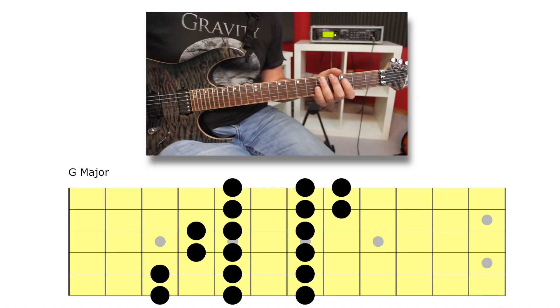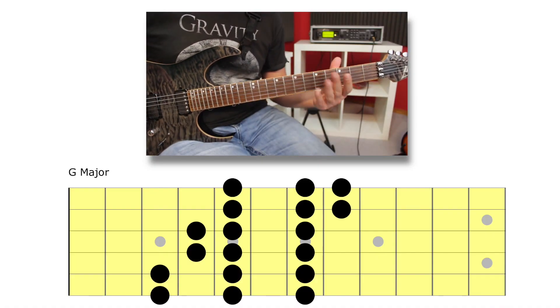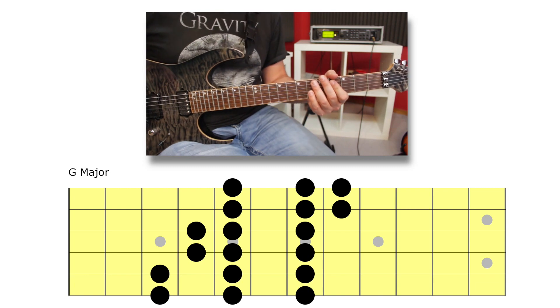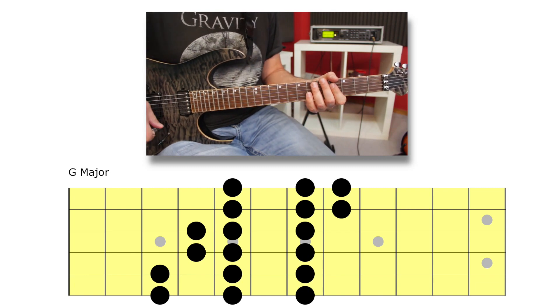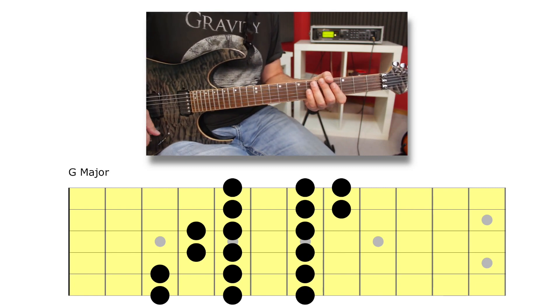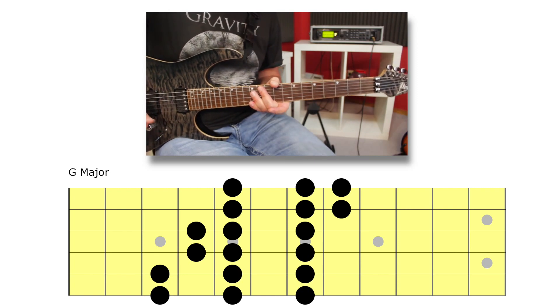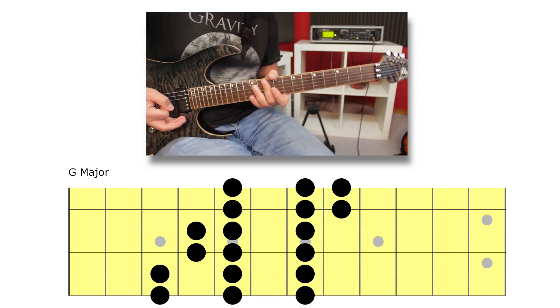Before we learn this sequence, I'm going to show you the full scale we're going to use. We are using a G major scale — G Ionian mode — three notes per string. Let me show you how that's done.